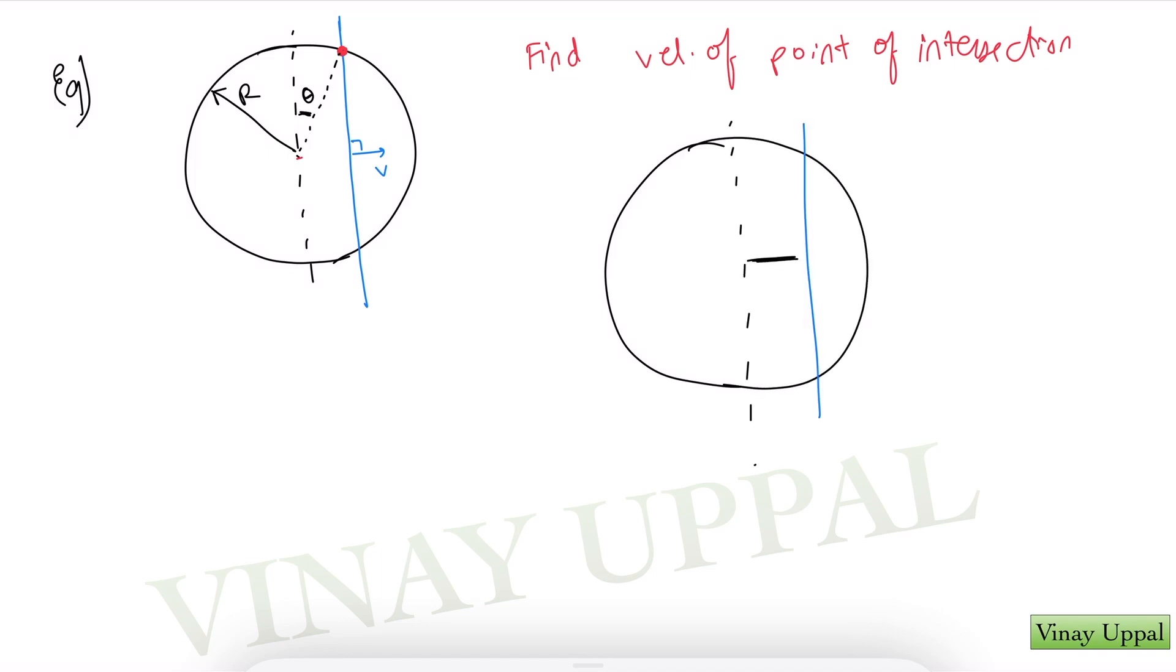If I just label this distance as x from the center, so I can write dx by dt is v, that will be the velocity of the blue line. And in dt time, let's say the blue line has shifted here. So if I were to just look at what's happening to the angle, this angle will be d theta.